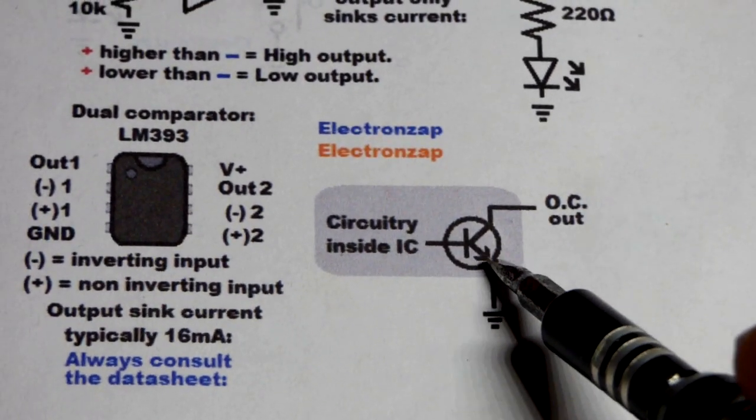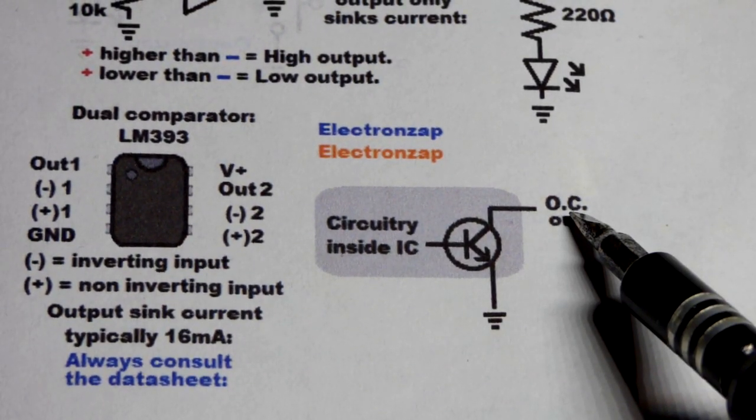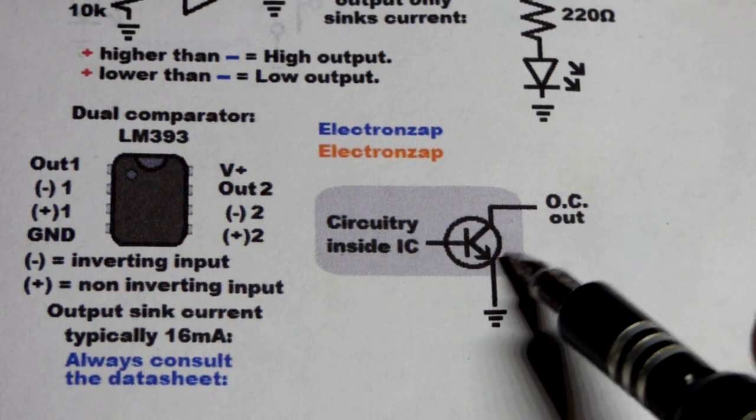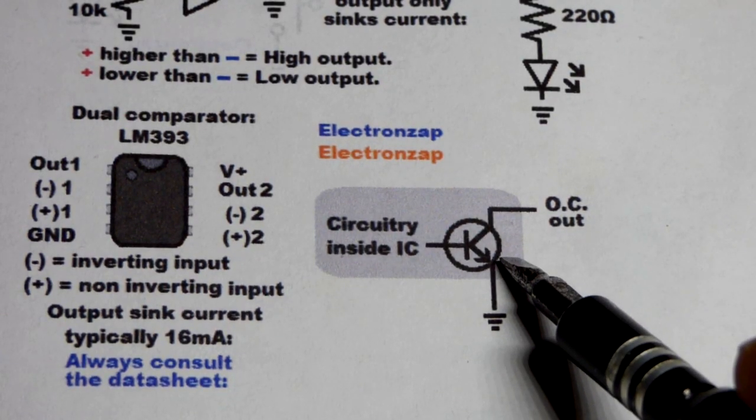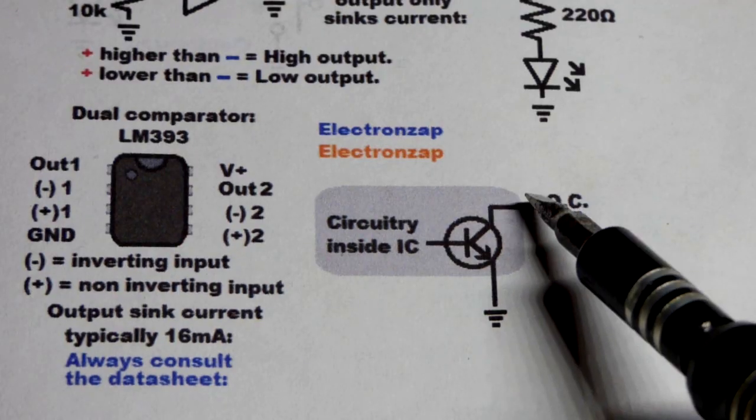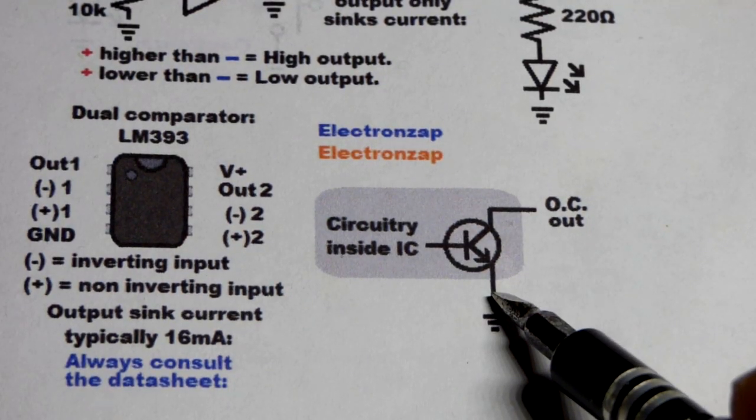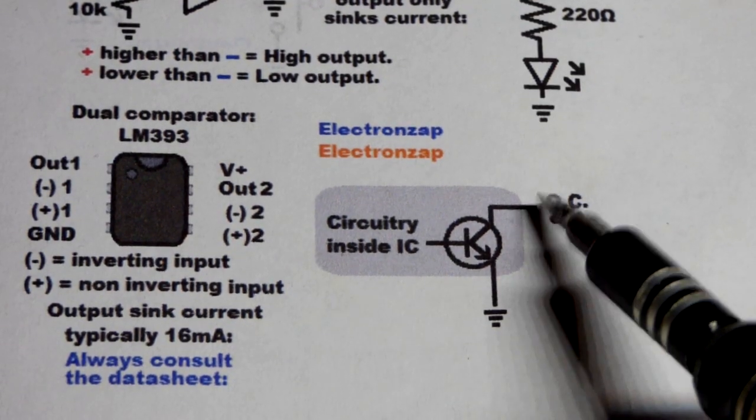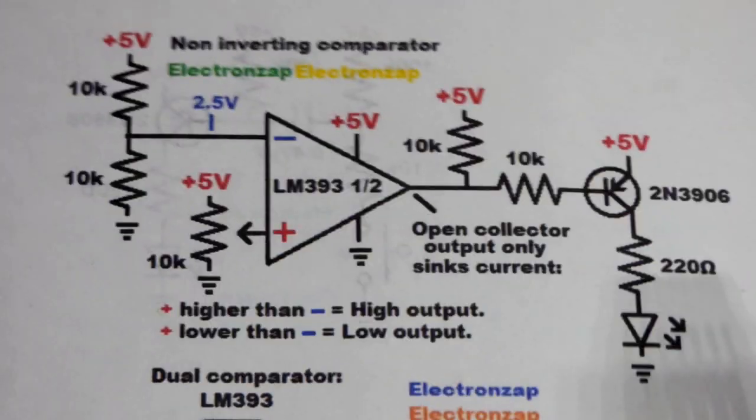So the output is, since it's open collector. There's other transistors where it's open drain, but this has an NPN bipolar junction transistor. So it's open collector, and it either connects to ground or it doesn't. That is important to realize.